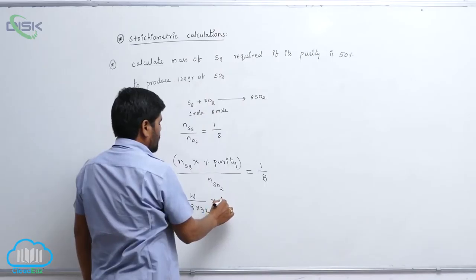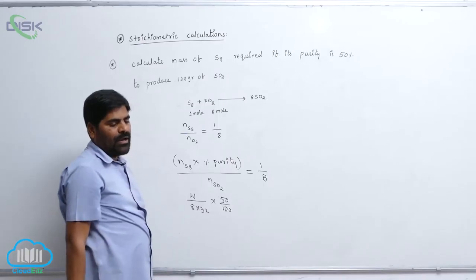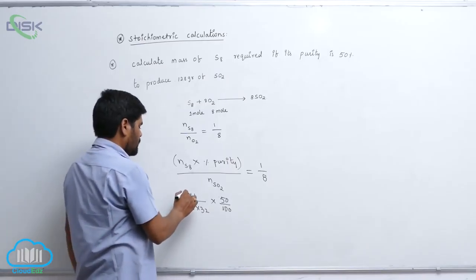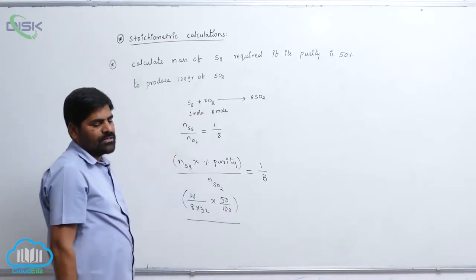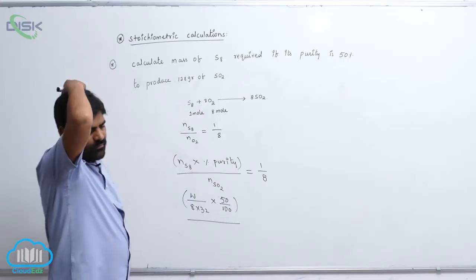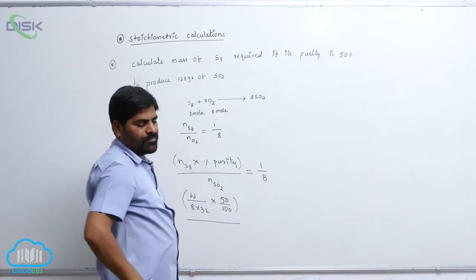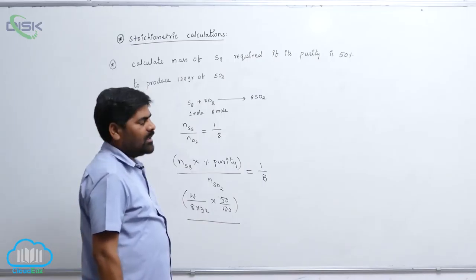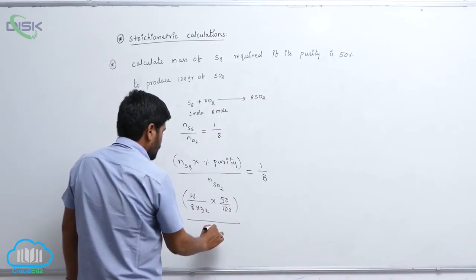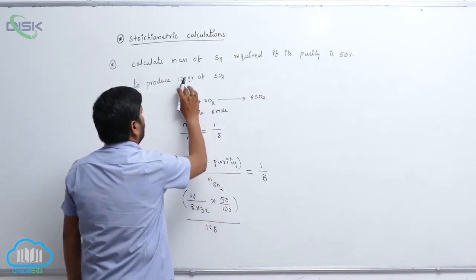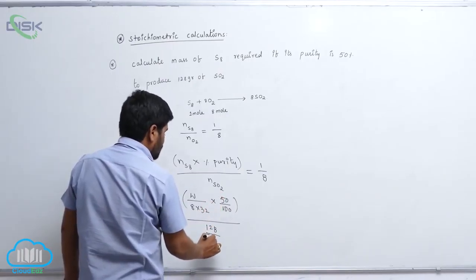50 percentage is given. So 50 by 100, it is divided by 128 grams. What is that? 128 grams by sulfur dioxide is 64.